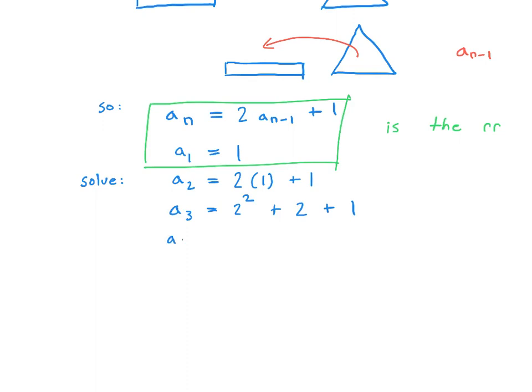Now a_4, we take everything that we had on the previous step, and we multiply it by two. So we get 2^3, plus 2^2, plus 2, and then we're supposed to add one to that. And at this stage, we can notice that we're getting powers of two. So how about instead of adding one, we'll add 2^0, and we can write 2^1, and we have a geometric series forming.